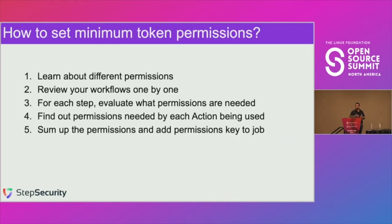The problem is that if you actually wanted to set these token permissions, you would have to do these things manually. You would need to know about the token and the token permissions, review your workflows one by one, and for each step figure out what permissions are needed. If you're using a GitHub action written by someone else, you'd have to look at their code to see what permissions are required. Then you'd have to sum all of these up and put the right key in your workflow files. This is a cumbersome process, which is why very few workflows actually have permissions set and why they're not secure.